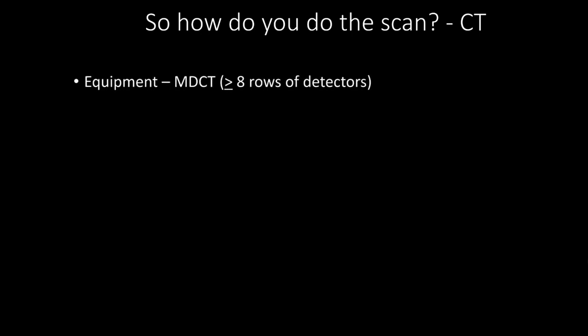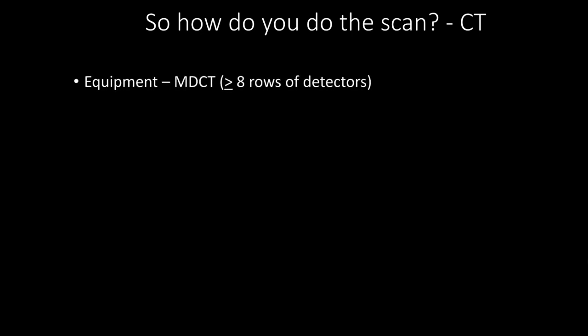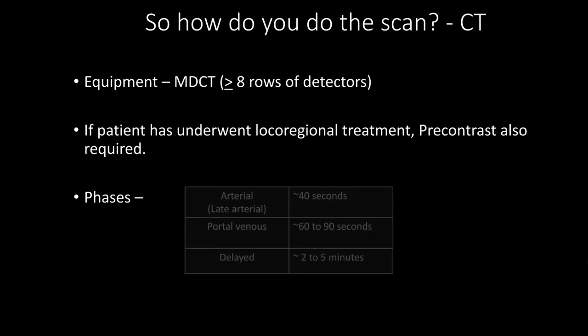For CT scanning, the equipment needed is a multi-detector CT with at least eight rows of detectors. If the patient has undergone locoregional treatment, a pre-contrast phase is also required. The phases needed include the late arterial phase at around 40 seconds, the portal venous phase at 60 to 90 seconds, and a delayed phase at 2 to 5 minutes.